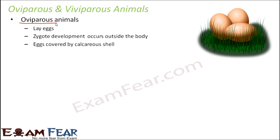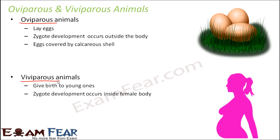Eggs are covered by a calcareous shell which acts as a protective covering. Viviparous animals directly give birth to young ones — there is no concept of an egg. The young ones directly come out, meaning zygote development occurred inside the female body. Human beings are the best example: for nine months, a female carries the baby inside her body, and during those nine months the baby develops. The zygote starts from a single cell and the entire development takes place inside the body. The incubation period for human beings is normally nine months.